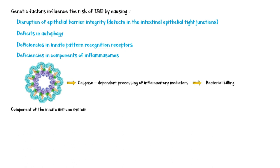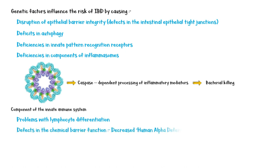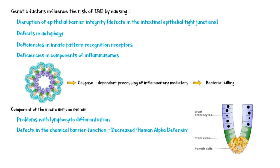In addition, genetic factors lead to problems with lymphocyte differentiation and defects in the intestinal chemical barrier function, such as decreased human alpha-defensin levels. Alpha-defensin is a small peptide with antibacterial properties secreted by the intestinal Paneth cells. Reduced levels of human alpha-defensin may lead to inappropriate growth of certain bacteria that can trigger the disease.